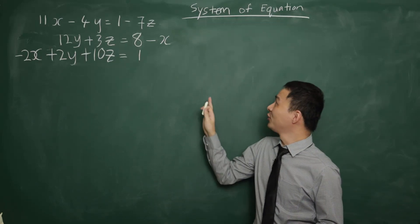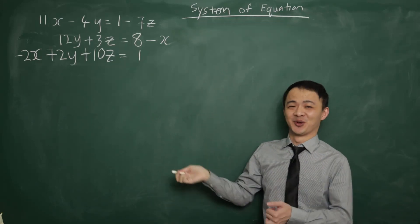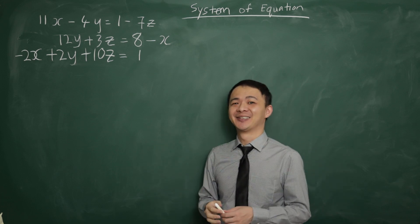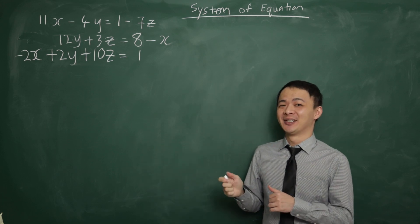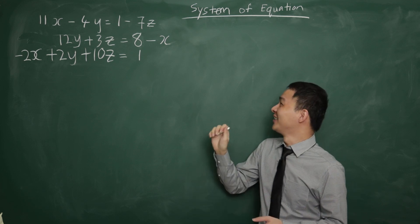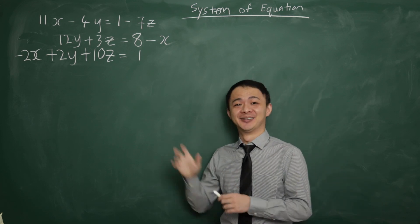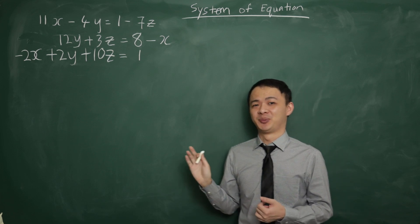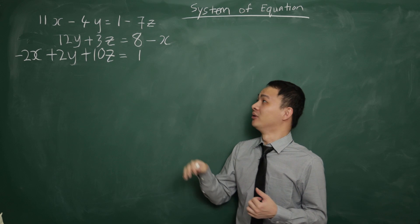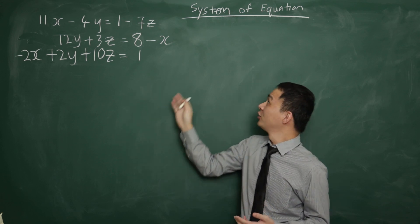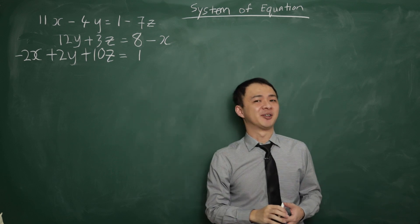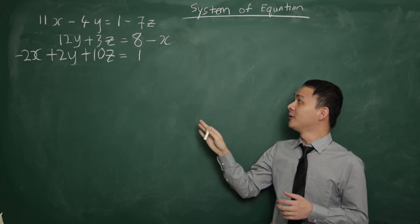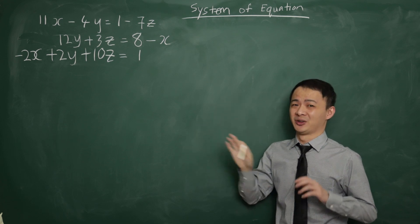Hi students. Today I'm going to teach you about the system of equations. I'm making this video because a few students in my Discord channel suggested this topic, as it's from the new Form Four chapter. That means previous Form Four students did not learn about this chapter. What's special about this chapter is that you have three unknowns — three variables — x, y, and z in one equation.